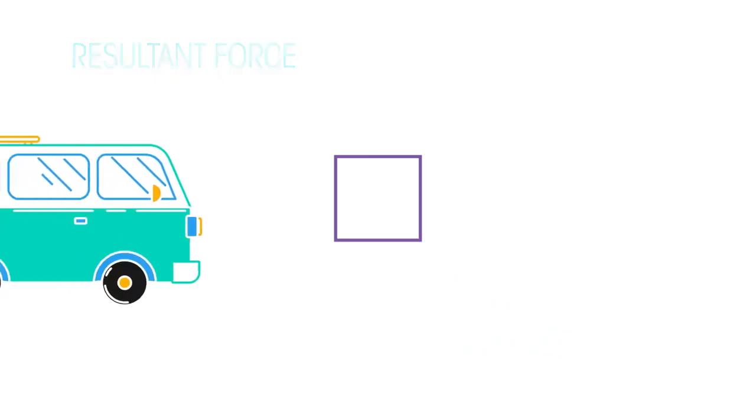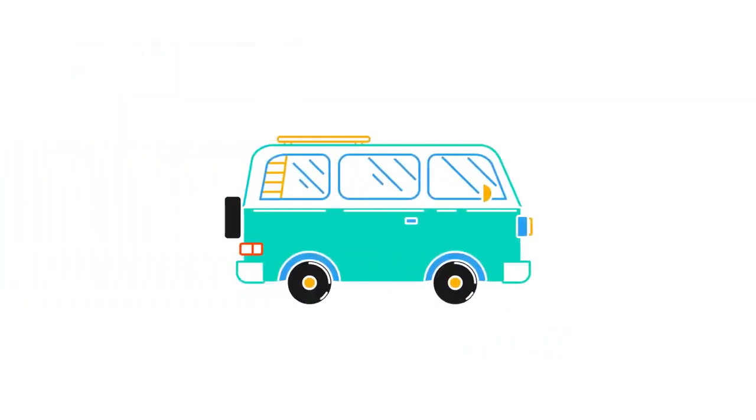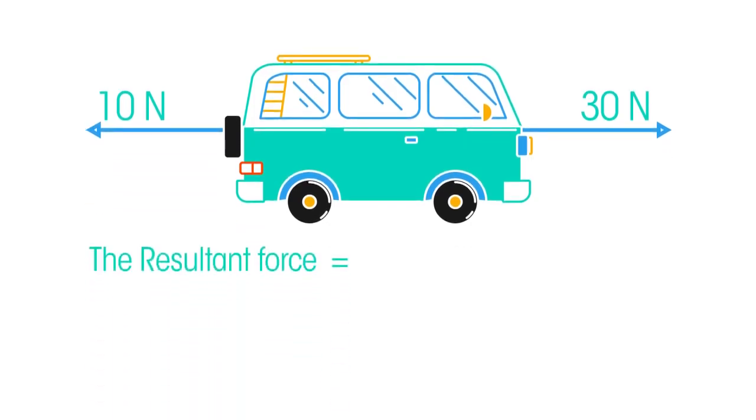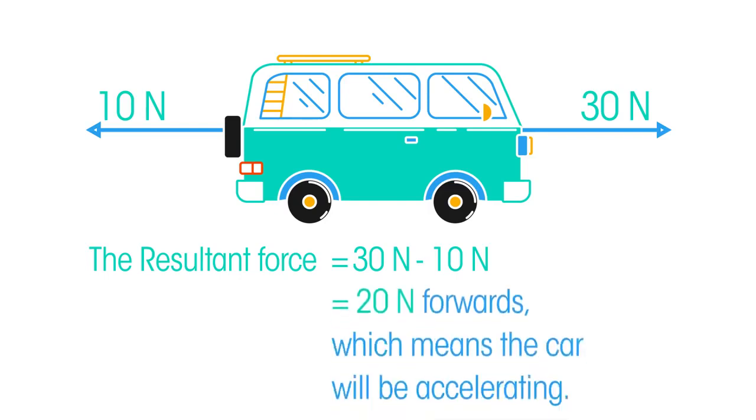For example look at this car. There is a force of 10 newtons pushing it backwards and a force of 30 newtons driving it forwards. To work out the resultant force we subtract the smaller force from the larger force. So the resultant force equals 30 newtons minus 10 newtons which is 20 newtons forwards. Which means the car will be accelerating.